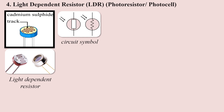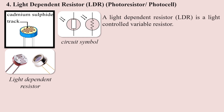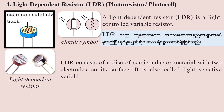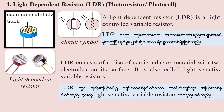This is a light-dependent resistor — it is a light-controlled variable resistor. LDR consists of a disk of semiconductor material with two electrodes on its surface. It is also called a light-sensitive variable resistor.